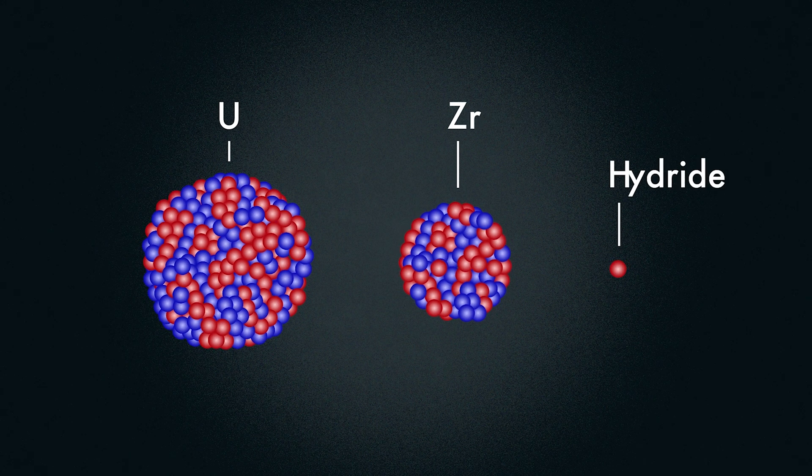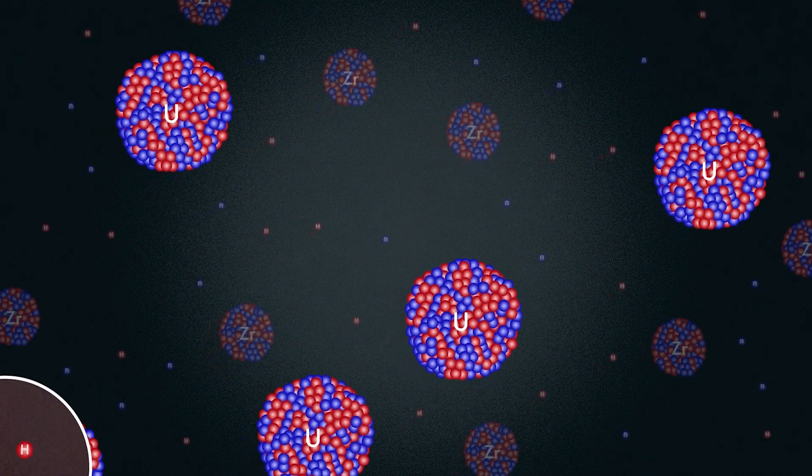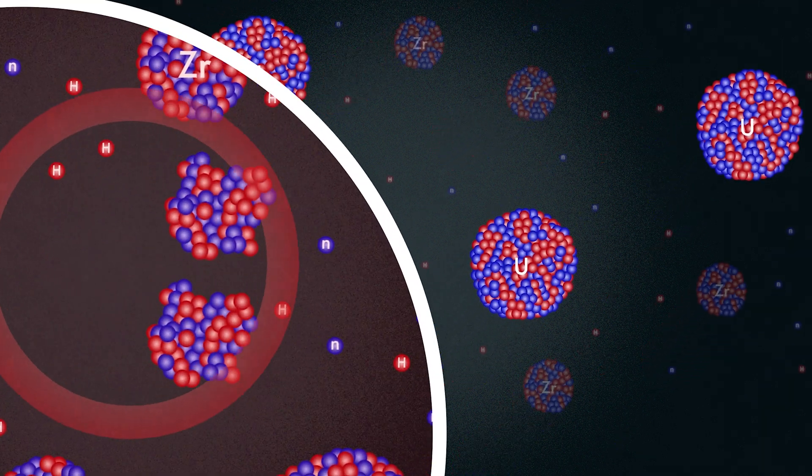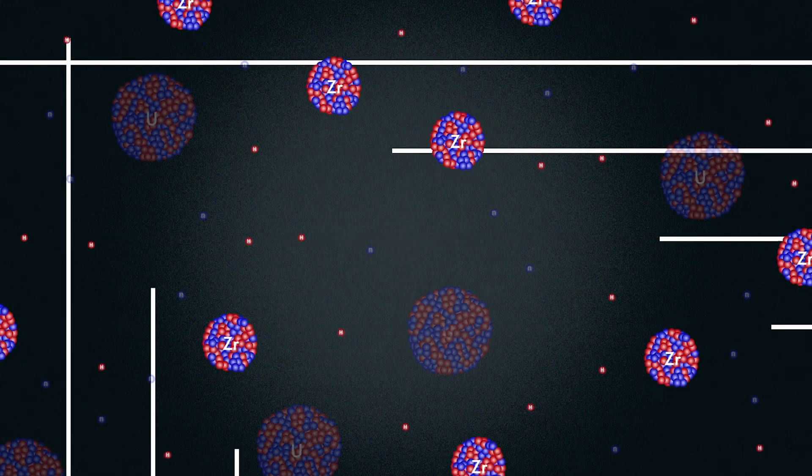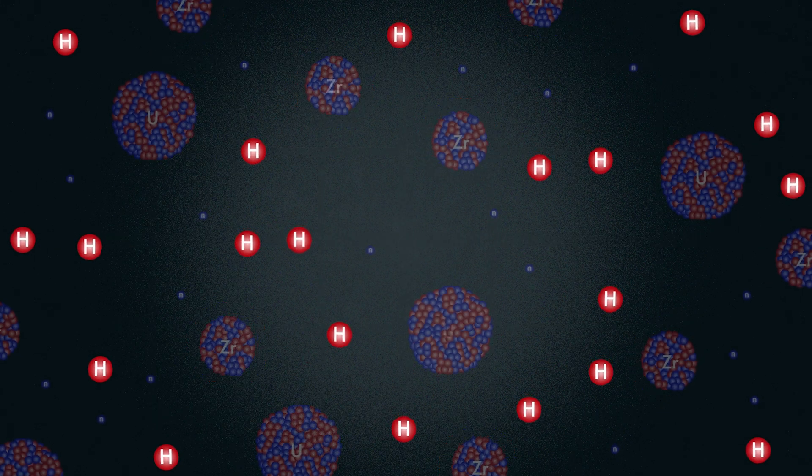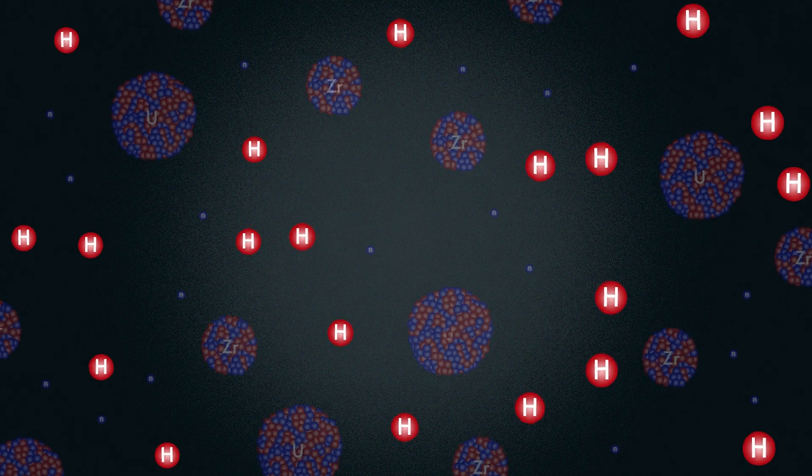So what exactly is Triga fuel? Its chemical formula is uranium-zirconium hydride. The uranium part is what releases the energy in the form of heat when it undergoes fission. The zirconium is there for structural integrity, but the hydride part actually means that there are hydrogen atoms, i.e. protons, distributed all throughout the fuel. So what's the point of the hydrogen?